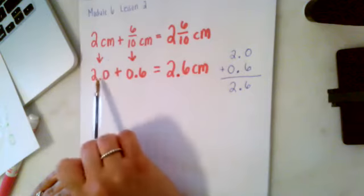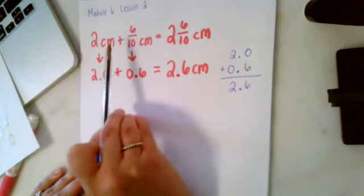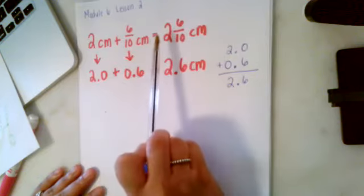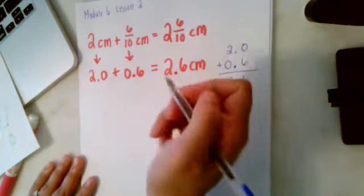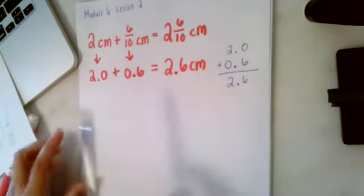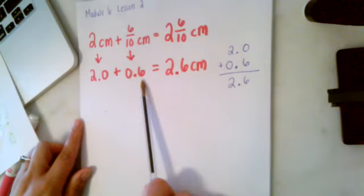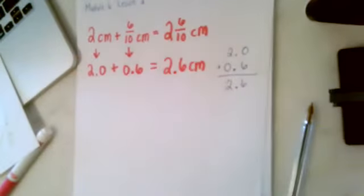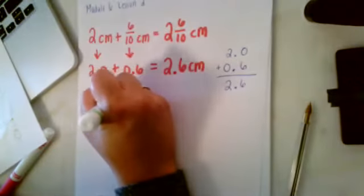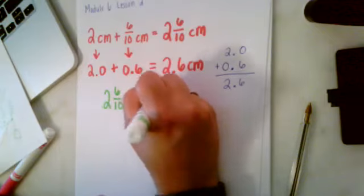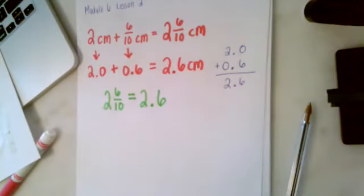So we have 2 centimeters which is the same thing as 2.0, 6 tenths which is the same thing as 0.6, add them together, we have 2 and 6 tenths or 2.6. If this is equal to this and this is equal to this, then our answers also have to be equal to each other. 2 and 6 tenths in decimal version is 2.6.